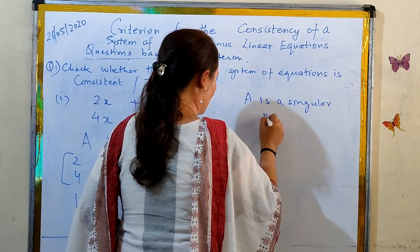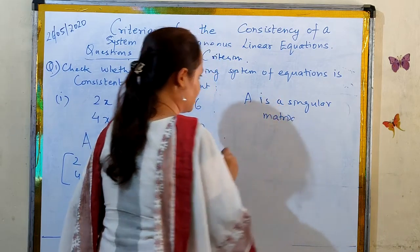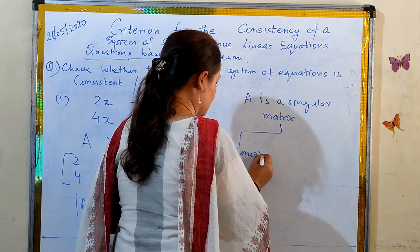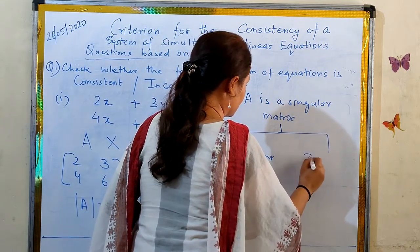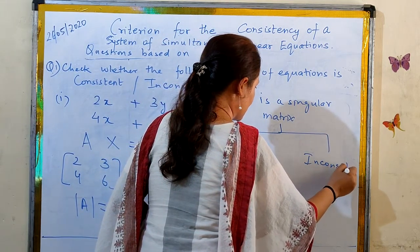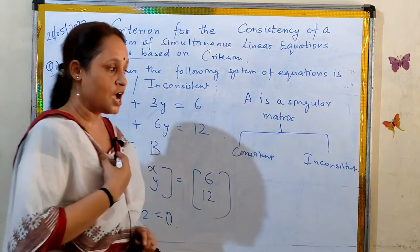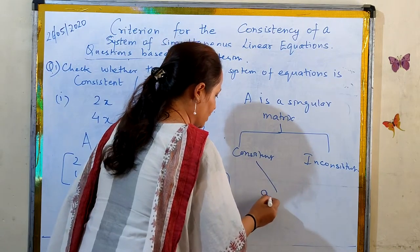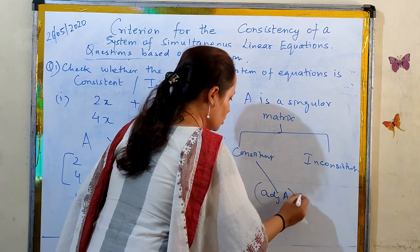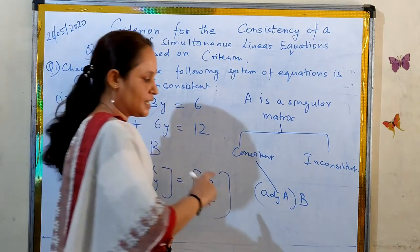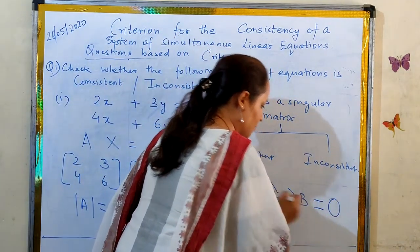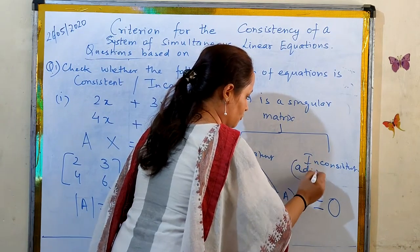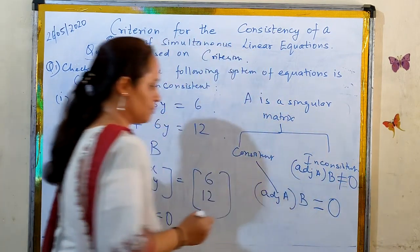When A is a singular matrix, from the criteria we discussed previously, the system could be either consistent or inconsistent. To determine which, we calculate adjoint of A multiplied by matrix B. If the system is consistent, adjoint of A times B should be a null matrix. If the system is inconsistent, adjoint of A times B should be non-zero (not a null matrix).